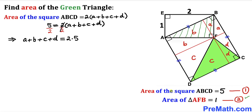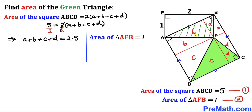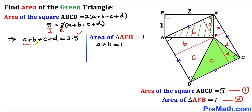Recalling equation 2, the area of triangle AFB equals 1. The area of triangle AFB is the sum of the two individual areas A plus B, so A + B = 1. Substituting into our previous equation, we replace A + B with 1: 1 + C + D = 2.5.